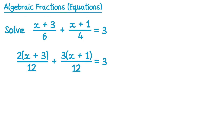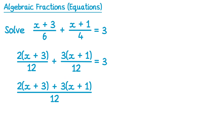Now that we have the common denominator we can combine these into one big fraction all over 12. So we've got 2 lots of x plus 3, then a plus sign in between, and then 3 lots of x plus 1, and the right hand side is still equals 3.